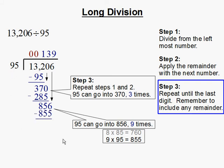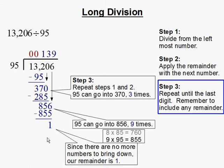We subtract. Then we're going to get 1. Since there are no more numbers to bring down, our final remainder is going to be 1. So our answer is 139 remainder 1. And this completes our problem.